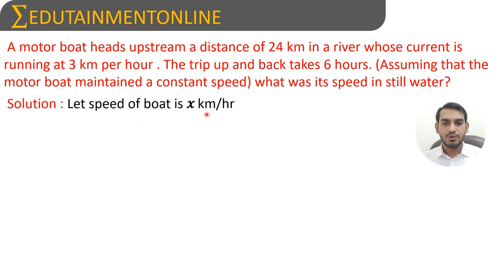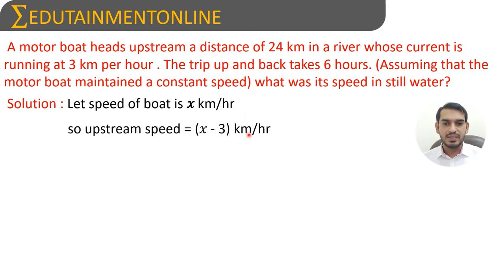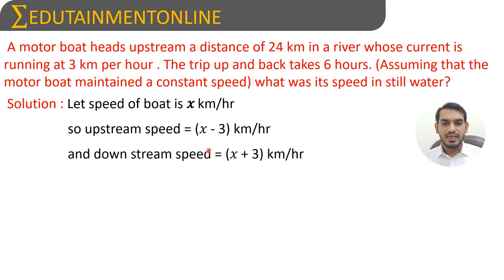Let us consider the speed of the boat is x kilometers per hour. Since the river is running at three kilometers per hour, the speed of the boat upstream will be x minus three kilometers per hour, and the speed downstream will be x plus three kilometers per hour.